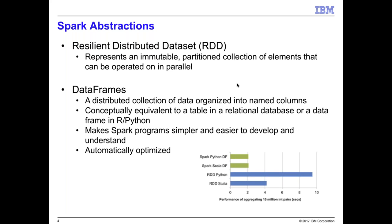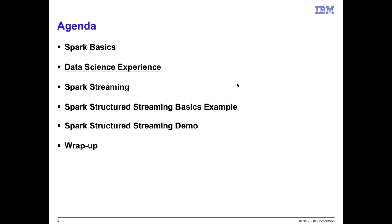Conceptually, a DataFrame looks like a table in a relational database, or the DataFrame construct familiar from R and Python. DataFrames make programming simpler and easier to understand, going back to the SQL paradigm and the ease of extracting and manipulating data. When DataFrames were introduced, Spark also introduced a new optimizer called Catalyst, which allows Spark processing to occur in a more optimized fashion. As you'll see, Structured Streaming is built upon the DataFrame construct and can take advantage of those optimizations.